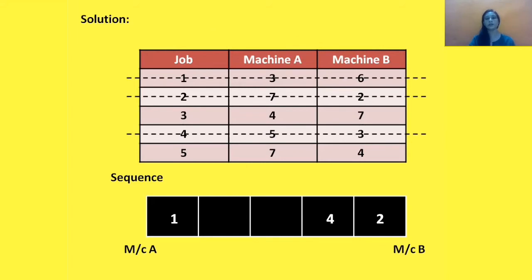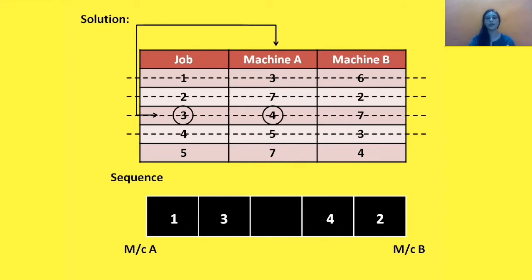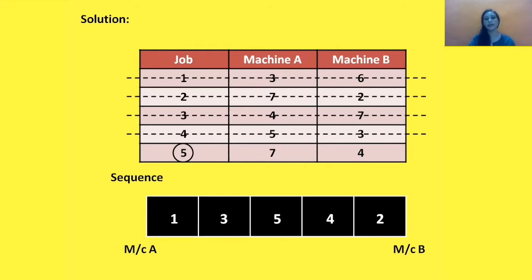The next minimum processing time is 4, occurring twice. We give priority to the first machine, so we take the first 4 corresponding to Job 3, allocate Job 3 on Machine A, and delete it. The last remaining job is Job 5, and there is only one vacant place in the grid, so we place Job 5 directly. The final sequence of jobs is now determined.